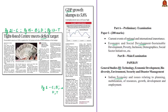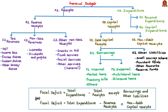Let us see about fiscal deficit. The news article mentions various heads like tax revenue, non-tax revenue, total receipts, total expenditure, etc., which are all concerned with fiscal deficit. To understand fiscal deficit, we shall look at the concept of government budgeting. The general budget of the government is the annual financial statement of the government, involving the money earned and also the money spent by the government. The general budget consists of two major heads: the receipts and the expenditure.